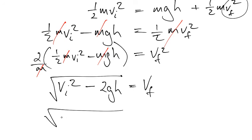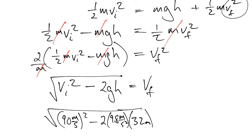Our initial velocity is 90 meters per second squared minus 2 times 9.8 meters per second squared times the height of 32 meters. And that's going to give us our final answer.